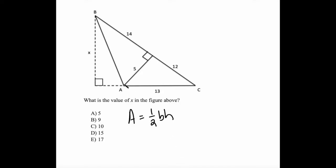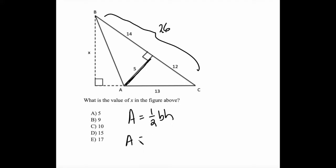How can we calculate the area of ABC? Well, we could use BC as a base. This base right here is 26 units long, and it has a height of 5. So that means the area is equal to one-half times the base, 26, times the height, 5 — which comes out to 65.